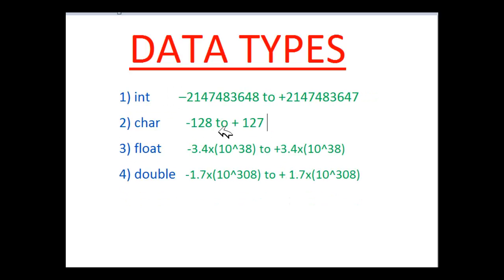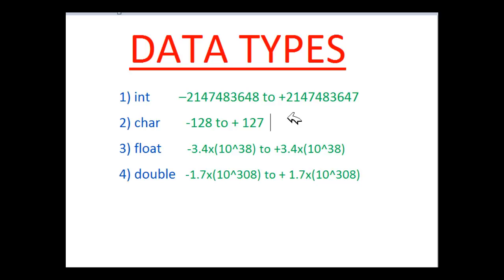The second data type is char, which is for characters. Characters can be alphabets like a, b, c, or capital A, capital B, capital C. There are also special characters like the exclamation mark, dollar sign, greater than, divide, plus — these all come under characters. The range for characters is minus 128 to plus 127, which corresponds to ASCII numbers. For example, the character 'a' has an ASCII number in that range, but we don't need to memorize them.